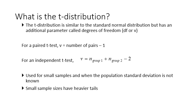The t-distribution is similar to the standard normal distribution but has an additional parameter called degrees of freedom. The most used notation for degrees of freedom is df, calculated as the number of observations minus one, and is often referred to as v in many tables.